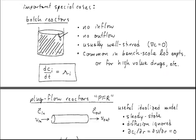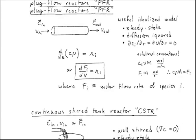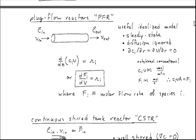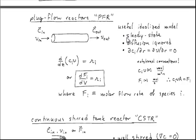But there are many other cases where that's not the case. Consider, for example, one of the ideal reactors that chemical engineers use all the time: the plug flow reactor, where you have some velocity of an inlet stream carrying some concentration of inlet species, and then a velocity leaving this plug flow reactor carrying some outlet concentrations of those species. It is an idealized model.